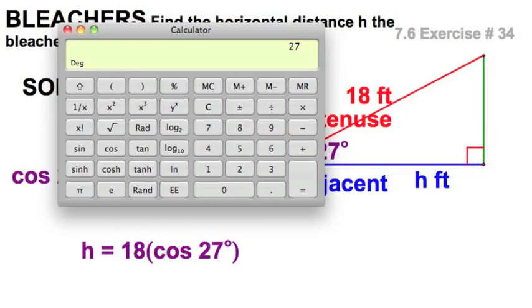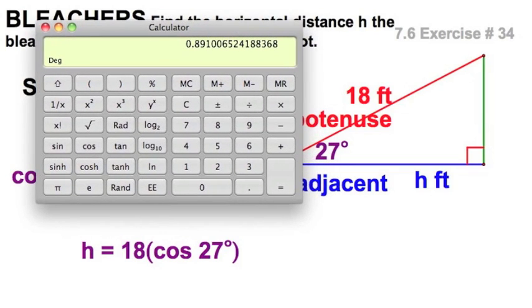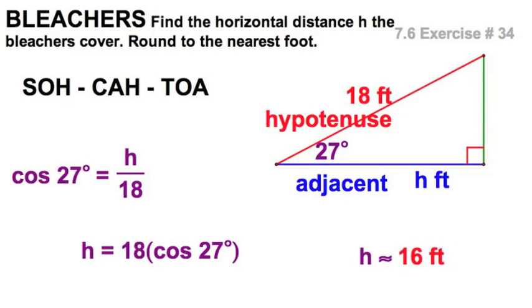This time, I'll put in 27. Hit the cosine. 0.89. Good mental check. It's less than 1. And I'll multiply times 18 to the nearest, well, it looks like to the nearest whole foot. That looks like 16. So, 16 feet for this distance.